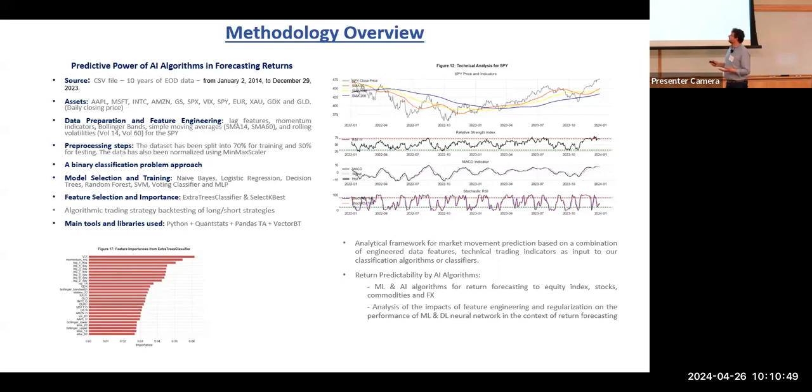We have model selection and training. We select a number of different nonlinear and linear algorithms for the task we're handling here. Regarding feature selection and importance, we derive our feature importance using the practical suppliers. We have an example here of the importance of the features we selected for the prediction exercise, and we also use statistical analysis.